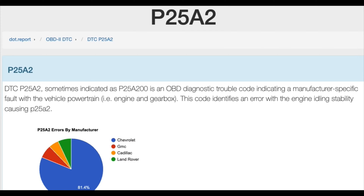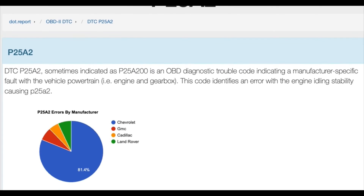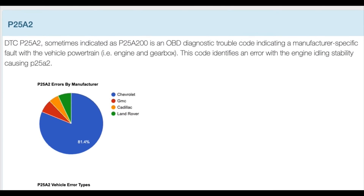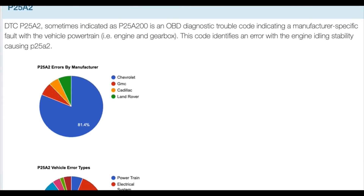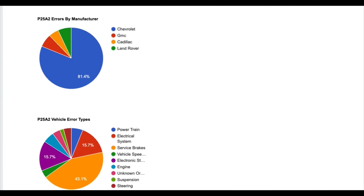Hello and welcome to our technical guide on understanding and resolving the DTC diagnostic trouble code P25A2, also known as P25A200 in some vehicles. This is a manufacturer-specific error code related to the powertrain, which includes the engine and gearbox. Today, we'll delve into what this error code signifies, its possible causes, and solutions to rectify it.